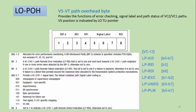Similar to the higher order path overhead for VC3 and VC4, we have similar bytes for lower order paths managing VC11, VC12, and VC2 virtual containers. The V5 byte, which exists in the lower order payloads, provides error checking, signal label, and path status.